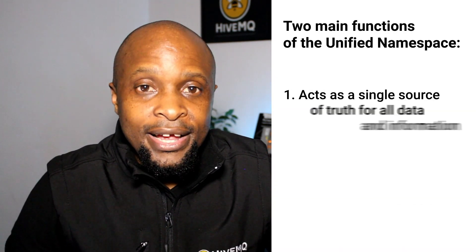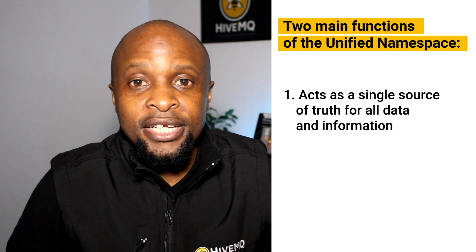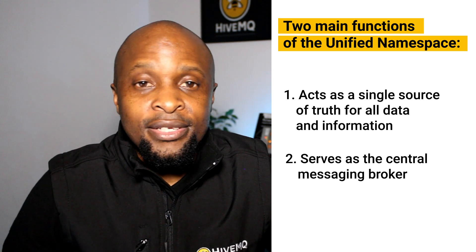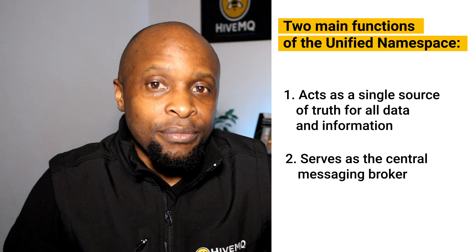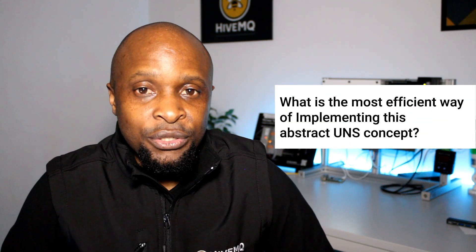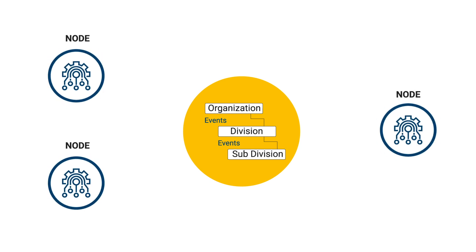Two main functions characterize the Unified Namespace. First, it acts as a single source of truth for all data and information in an organization. Second, it serves as the central messaging broker, such that instead of using many point-to-point communication interfaces, you route your messages through a single communication interface. You need a technology that allows you to organize data in a central location based on your organizational structure and events. Data centralization gives every network participant access to information — they will know where and how to find relevant information.